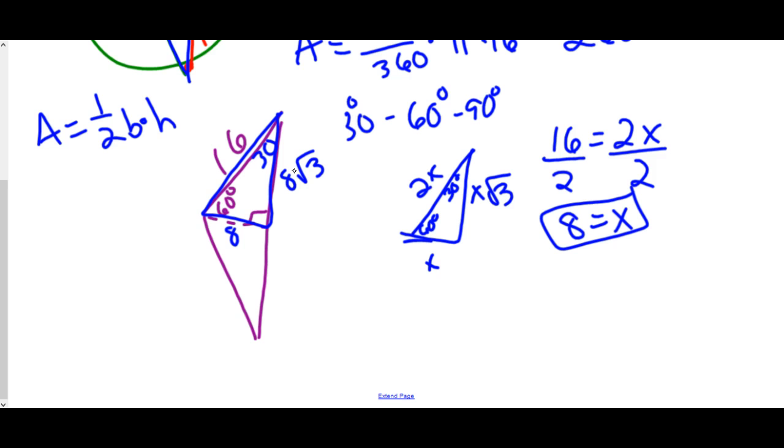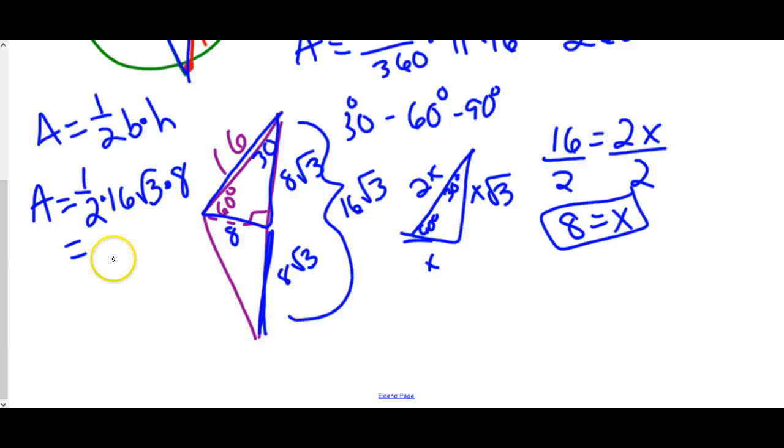So now I can find the entire base. There's two sides to my base. The other side would also be 8 square root 3 because it would be the same length. So added together we would get 16 square root 3. So now area of this triangle is one-half base, which is 16 square root 3, times height, which is 8. Again, plugging this into a calculator is 110.85.